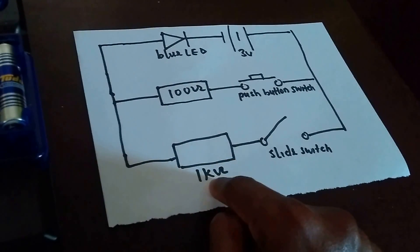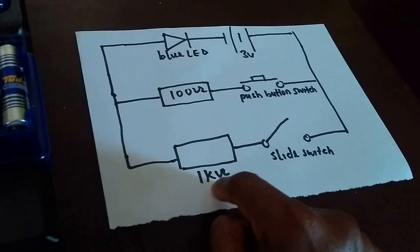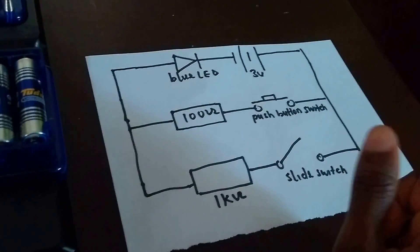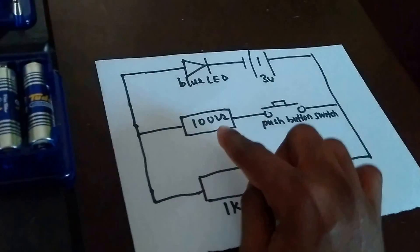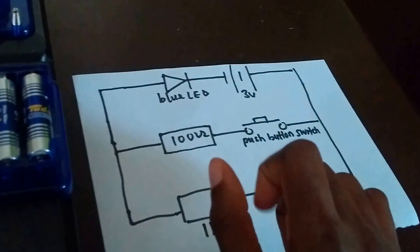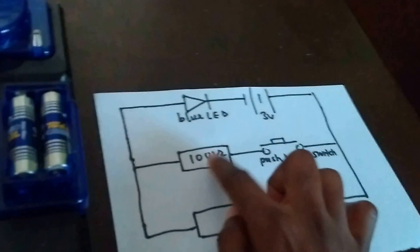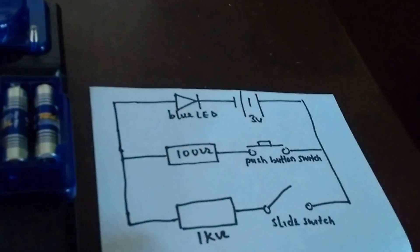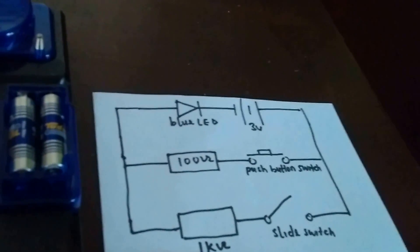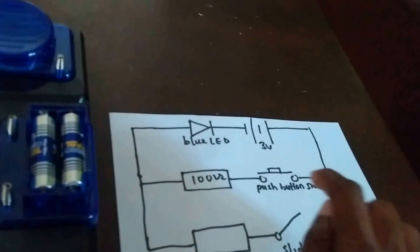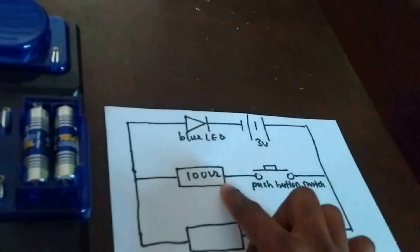It's because the current through this part will be less, and as a result, the LED will be less bright. On the other hand, the part of the push button switch has a resistor of smaller resistance — smaller compared with this. So the current through this part will be more, and the LED will be brighter.